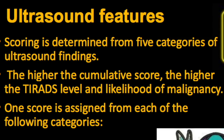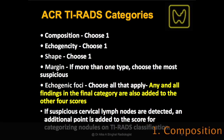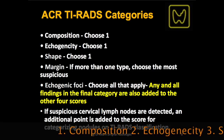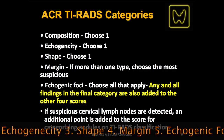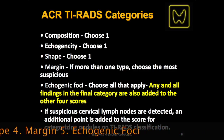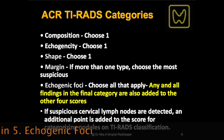The ultrasound scoring is determined from five categories of ultrasound features. The higher the cumulative score, the higher the TI-RADS level and the likelihood of malignancy. The five categories from which we choose a score are: composition, echogenicity, shape, margins, and echogenic foci. If there are any suspicious cervical lymph nodes, we add an additional score for that.